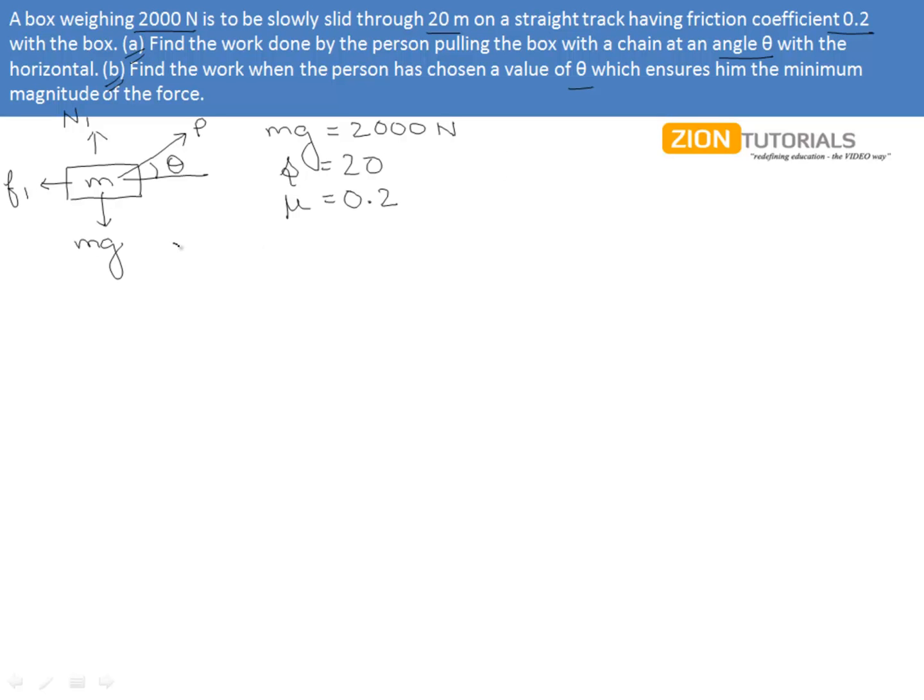Proceeding with the first part of this question, that is, find the work done by the person pulling the box at an angle θ. Now, framing the equation in the vertical direction, we get Mg, that is 2000, equals to N plus P sinθ. Marking it as equation number one,